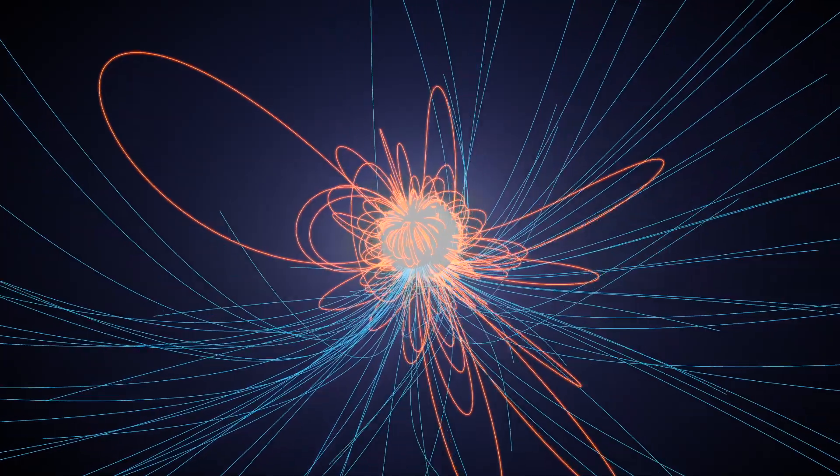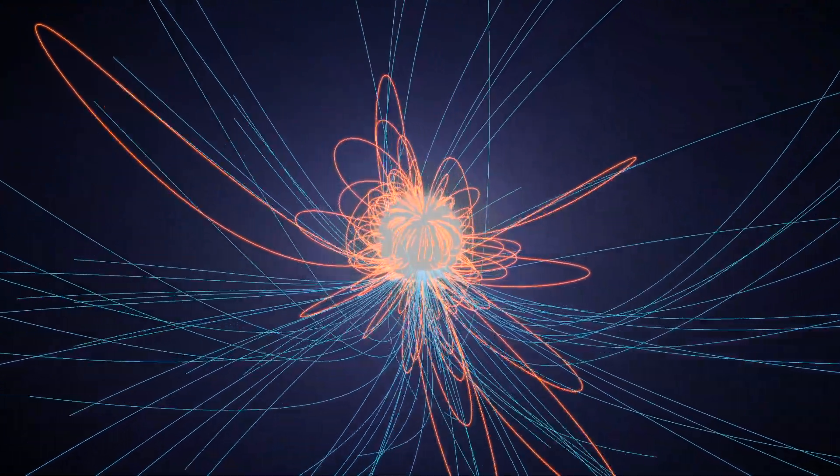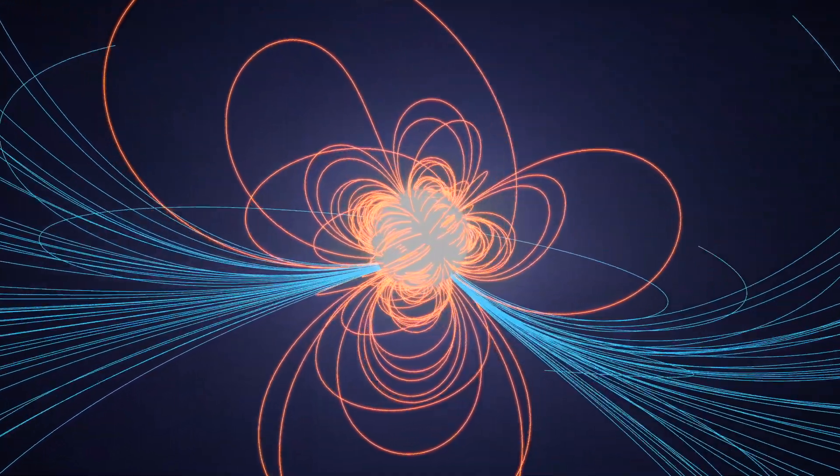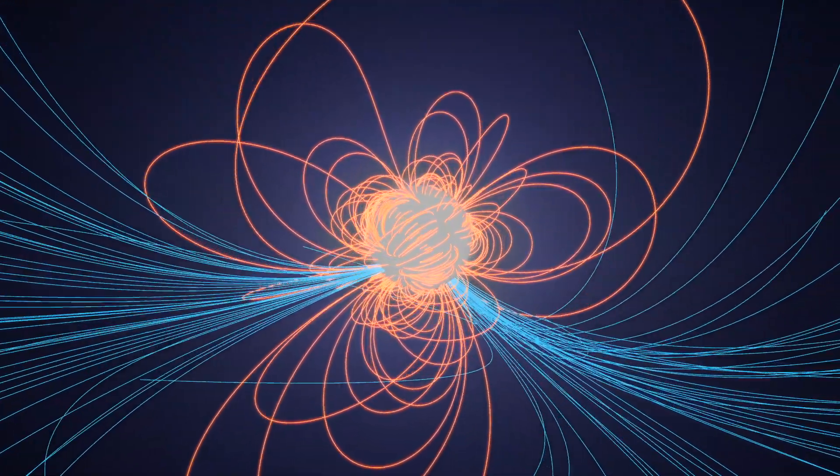Scientists are still trying to determine why J0030's spots take on these shapes and arrangements, but for now it's clear that pulsar magnetic fields are more complex than originally assumed.